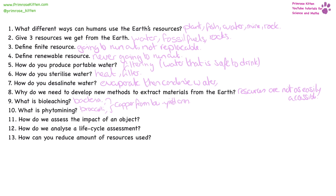How do we assess the impact of an object? We need to look at the resources that went into production, the use of the object, and whether it can be recycled or disposed of. The impact is going to be how much resources, energy, and waste were produced in each stage of an object's life. A life cycle assessment looks at the impact of each stage of an object's production, use and disposal, including the energy requirements and the environmental impact.